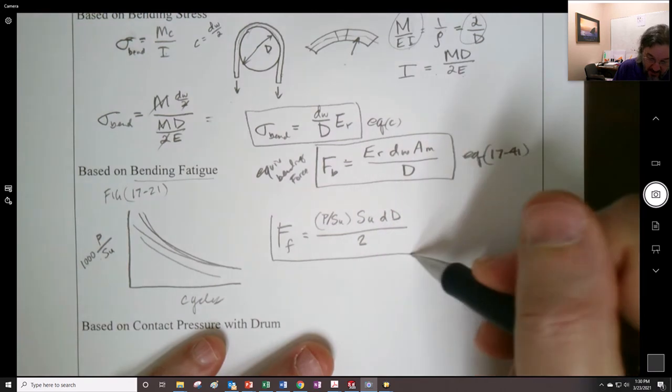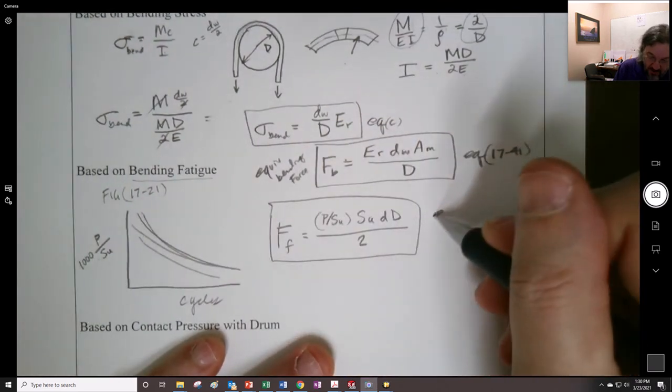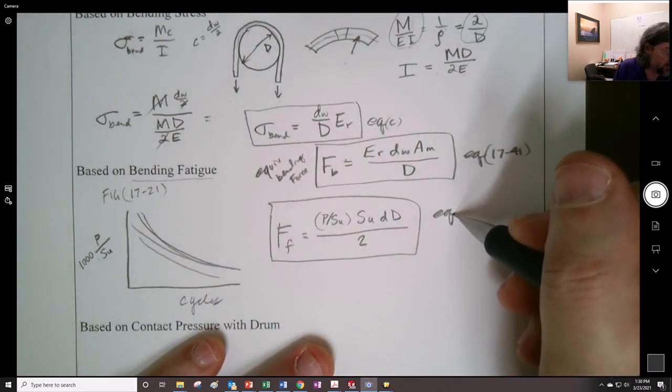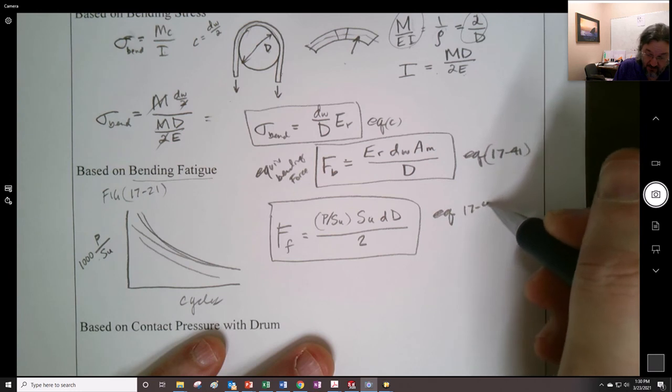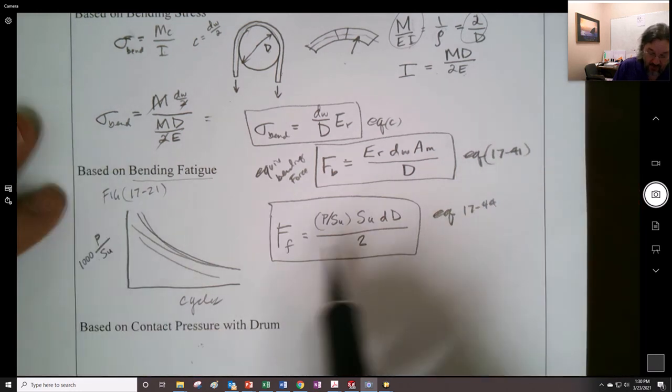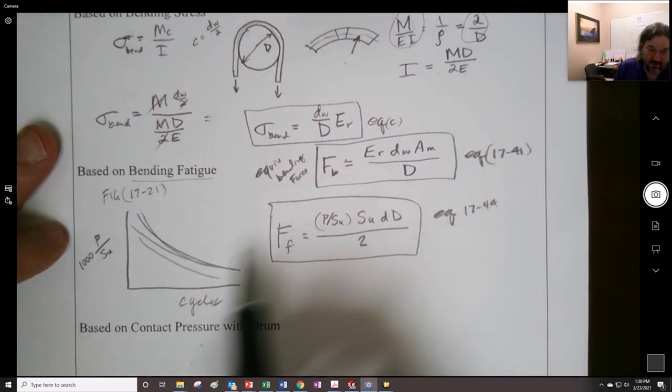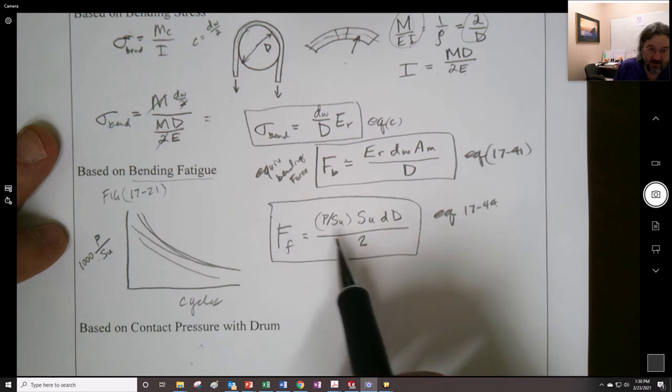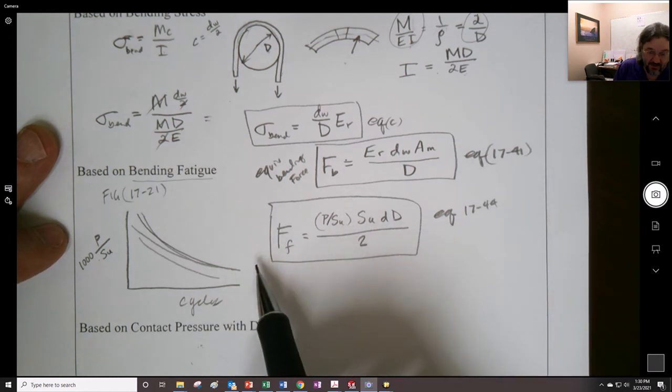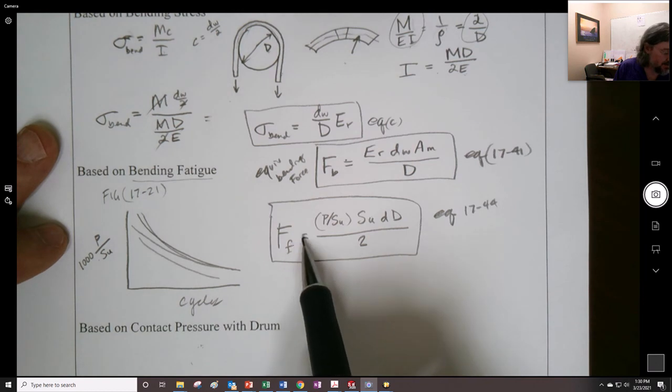But we'll say that this right here is equation 1744, right? So this is, it, whereas this is like bending that's causing these things, this is the strength of things. So we will take a look at those.